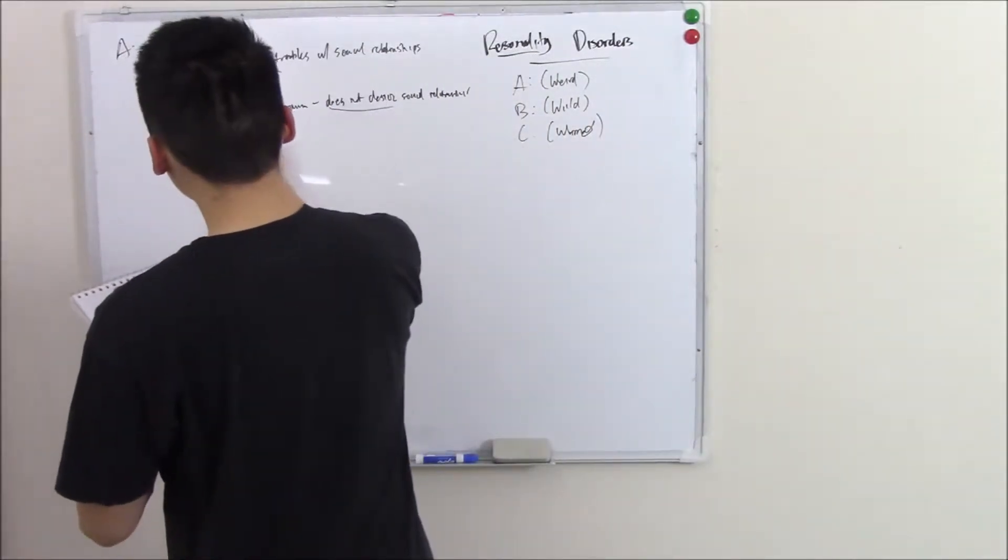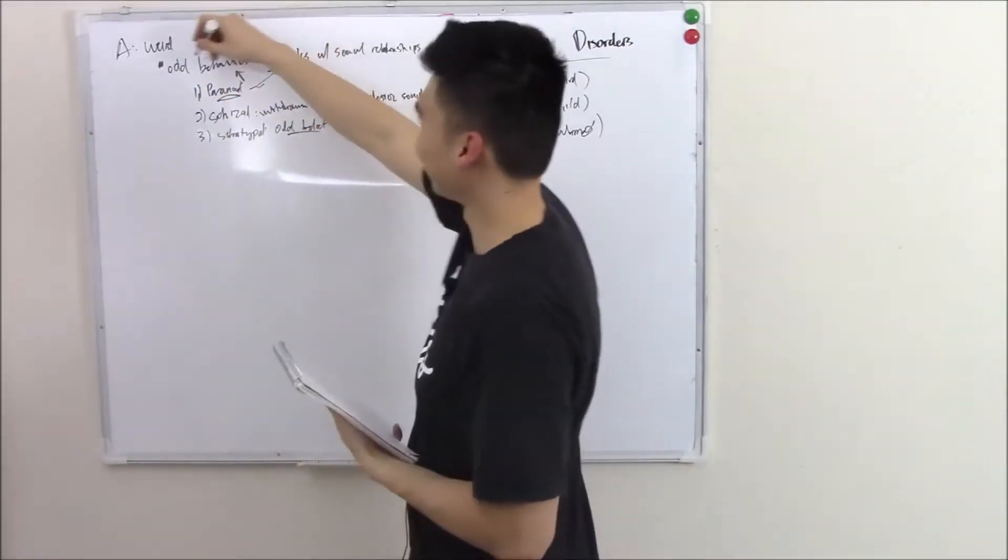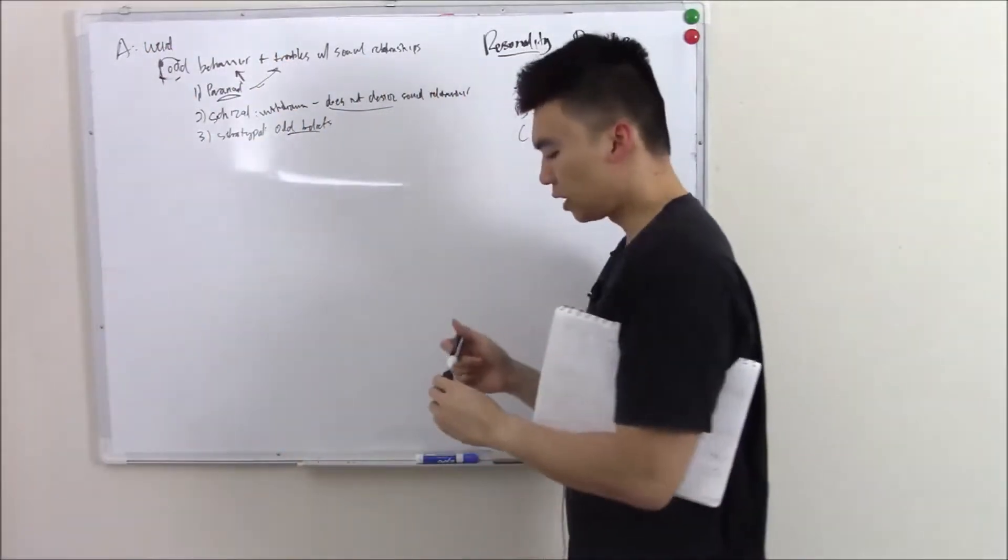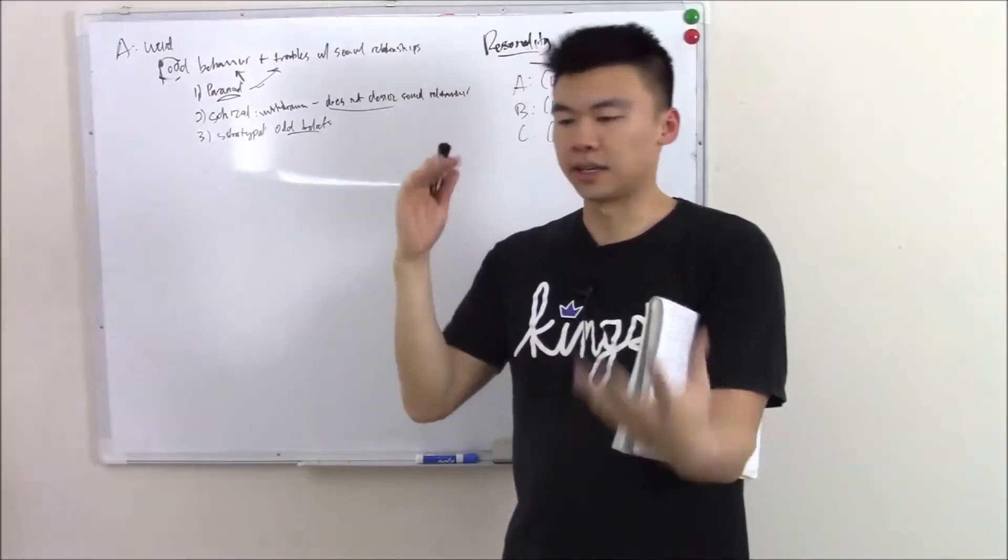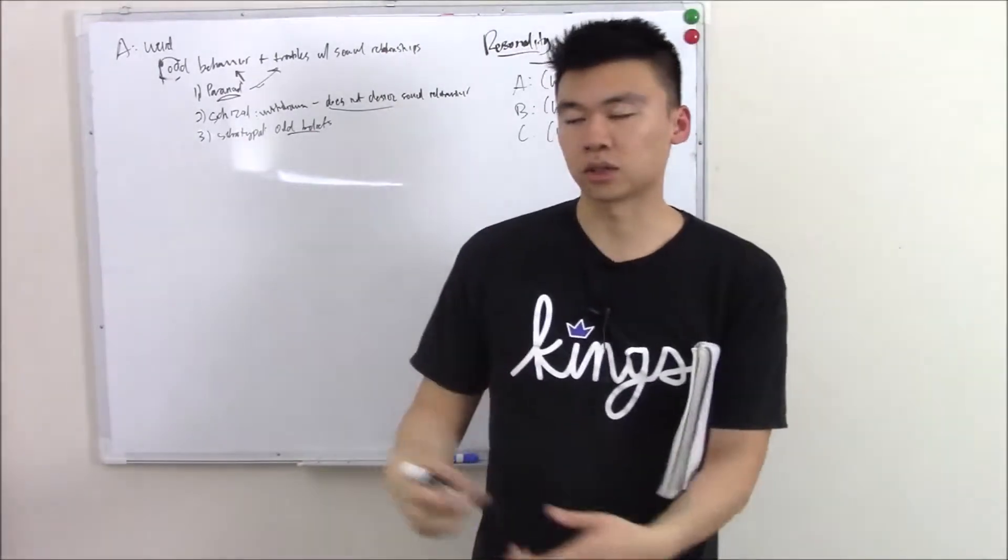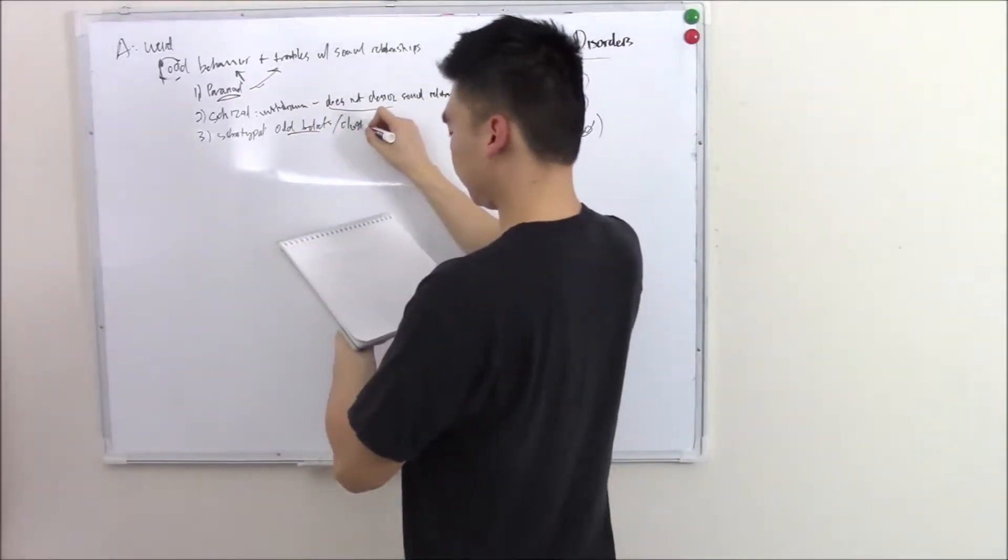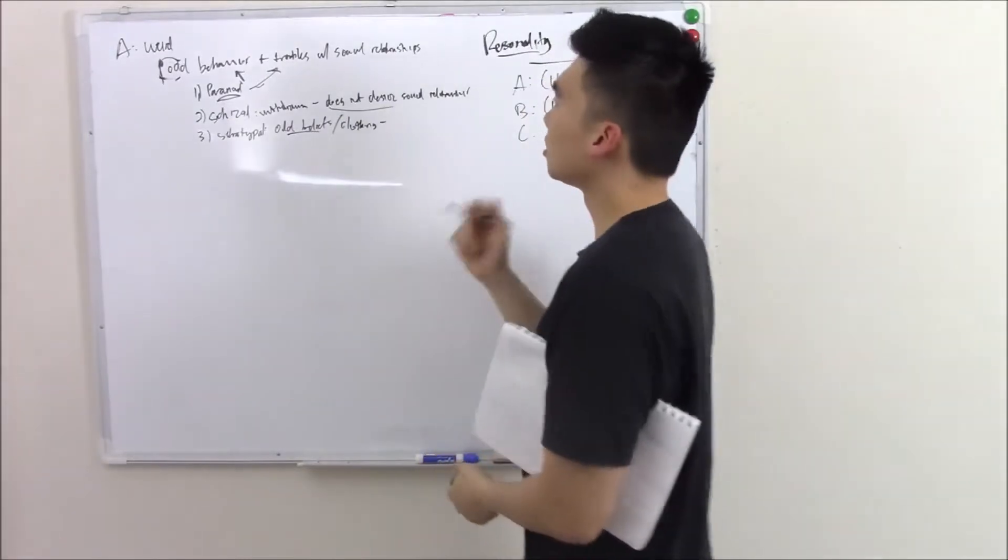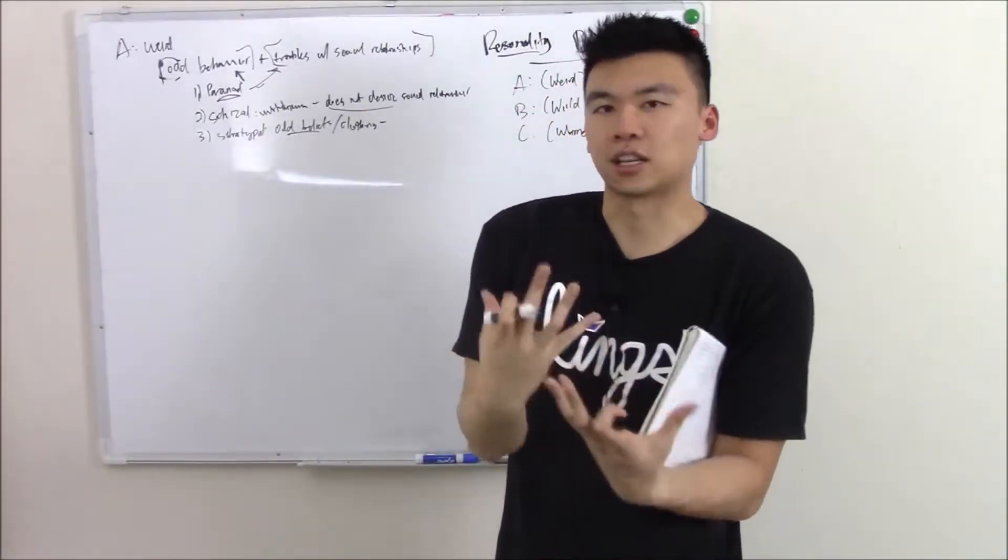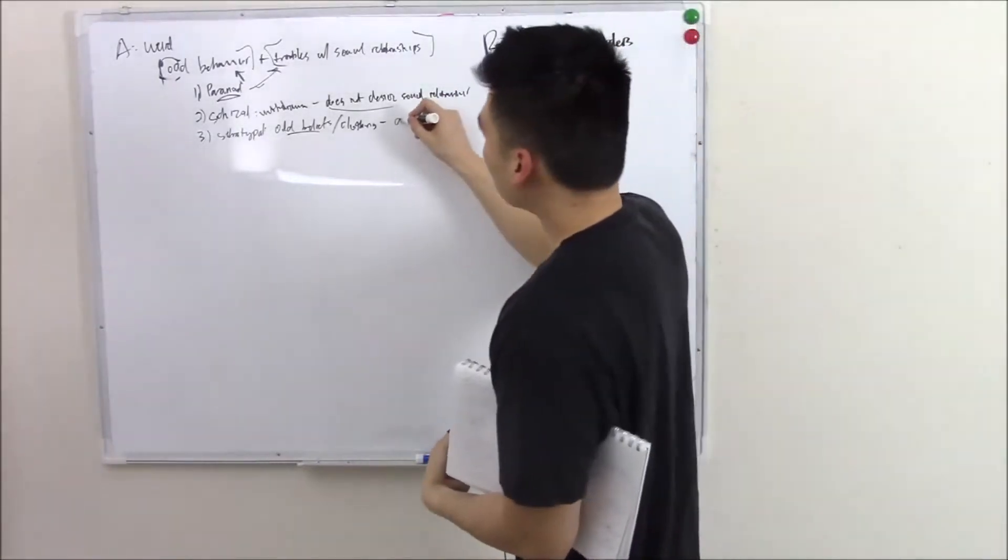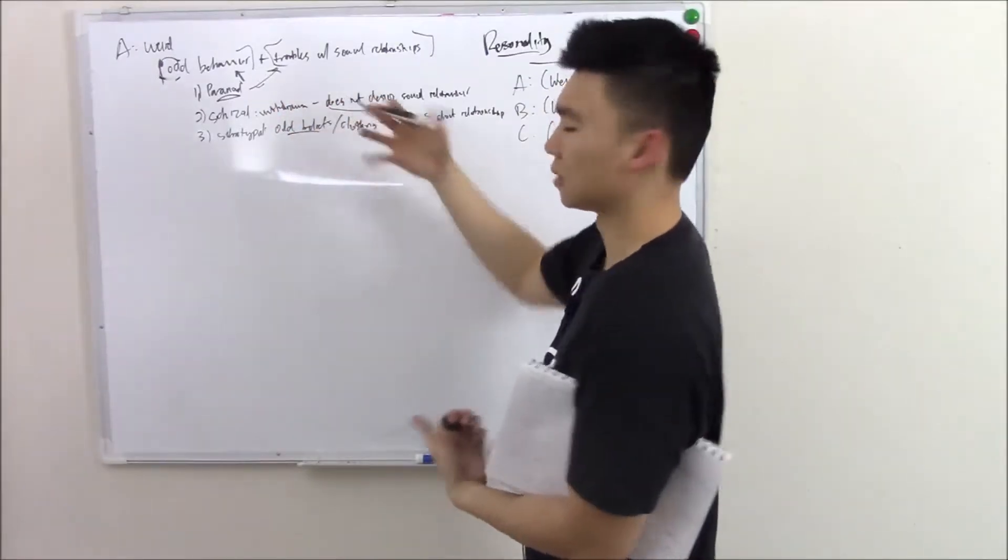Last but not least, schizotypal or schizotypal. This is characterized by odd beliefs, which is kind of the name of the game. Things like believing in palm reading or telepathy or mind reading or aliens. Those put that in the question stem. Dress very eccentrically. So odd beliefs, clothing, and something you should know. That's the odd behavior part. How about the troubles with social relationships part? They want to make relationships but they're just very anxious about it. It gives them anxiety. Anxious. They want to, they're just very anxious about social relationships as opposed to schizoid which doesn't desire at all.